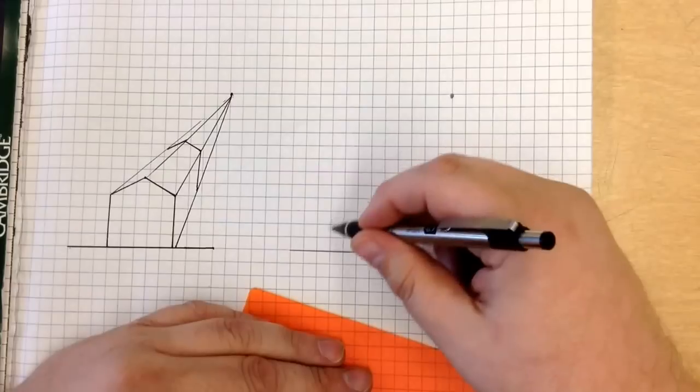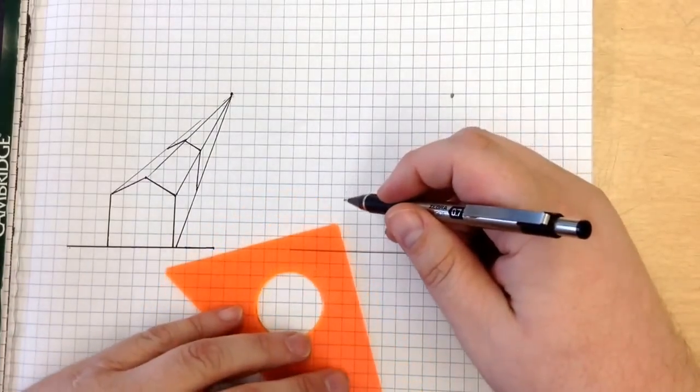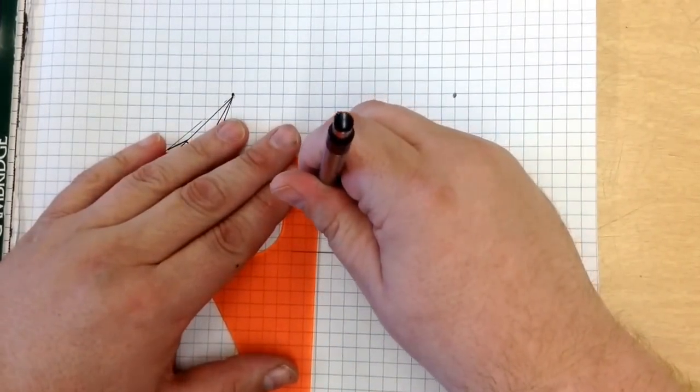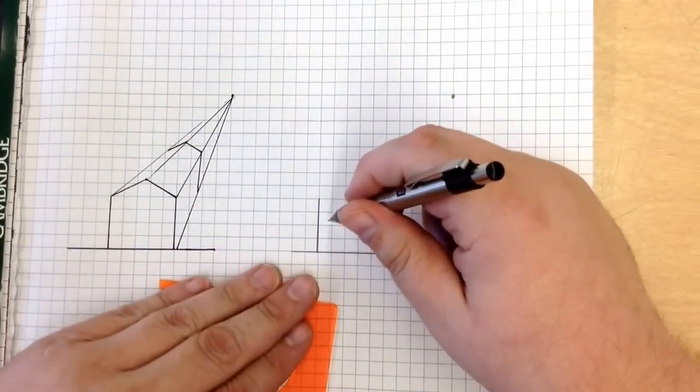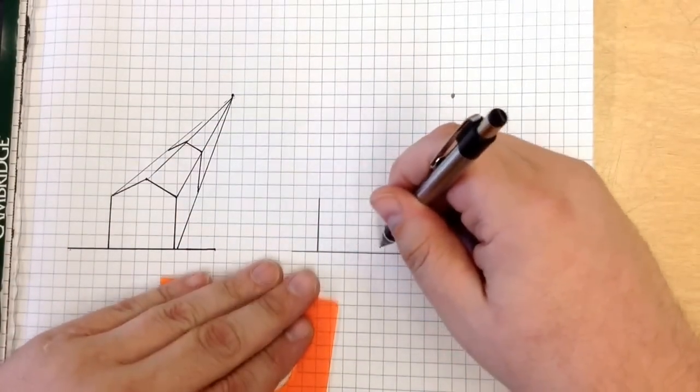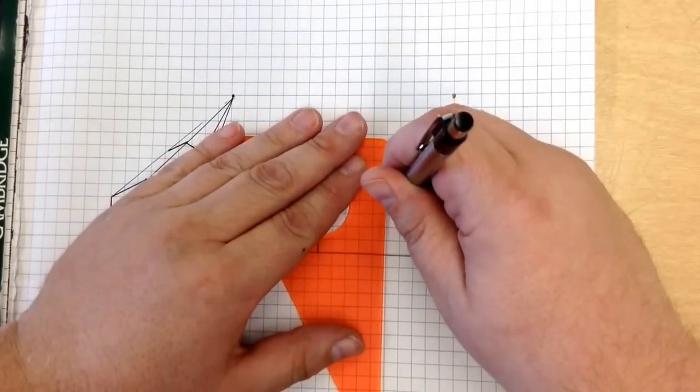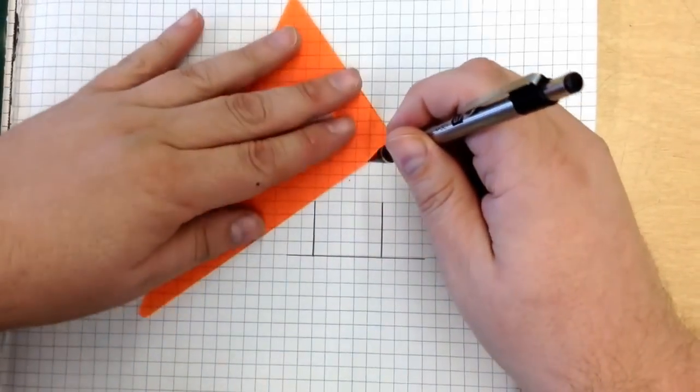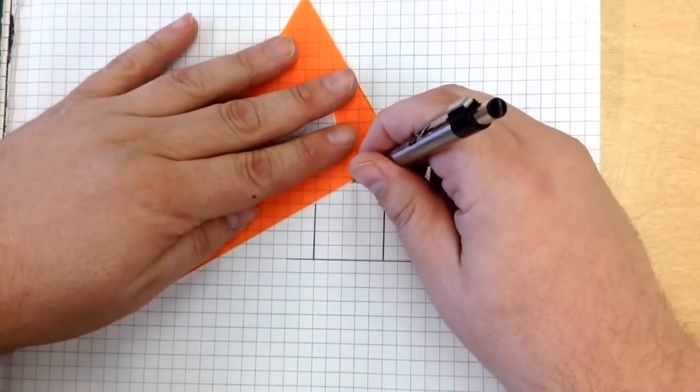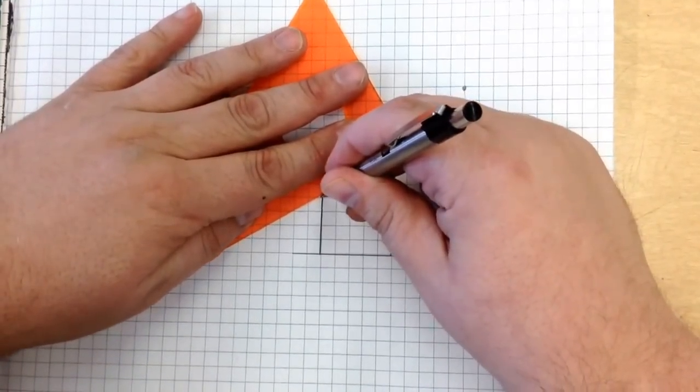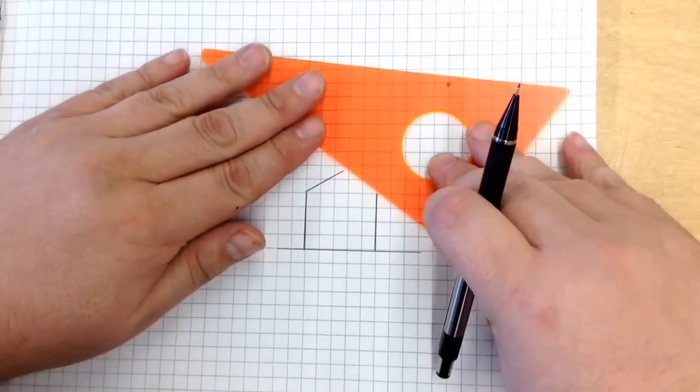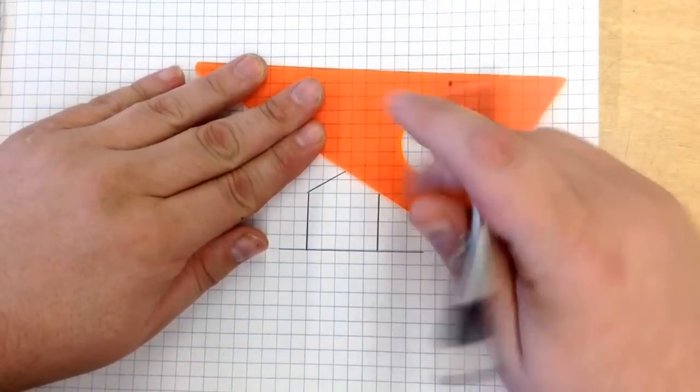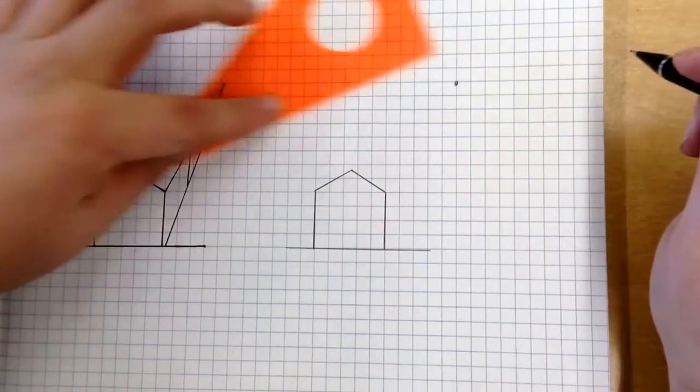I'm going to draw the front view of this shape, which is four tall, right there, and it's five wide, just like so. I'll mark where the roof goes, just like so.